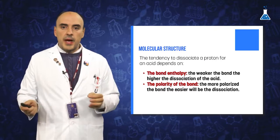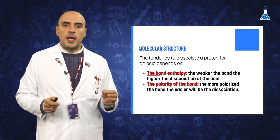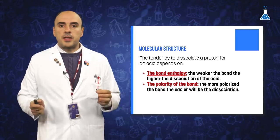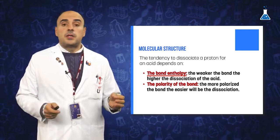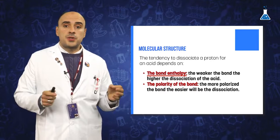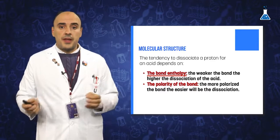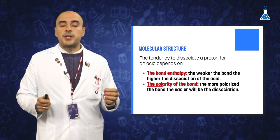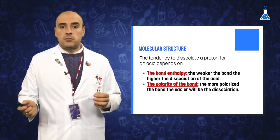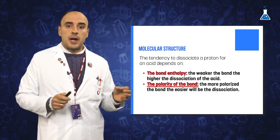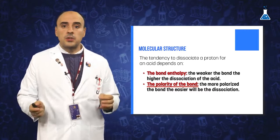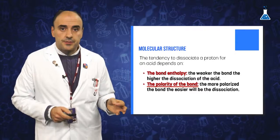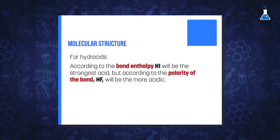The first one is the bond enthalpy. The weaker the bond, the higher the dissociation of the acid. The second one is the polarity of the bond. The more polarized the bond, the easier the dissociation.